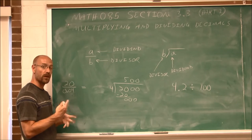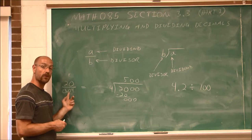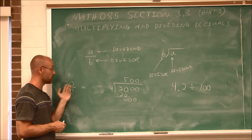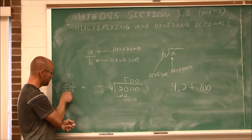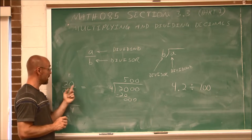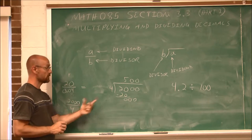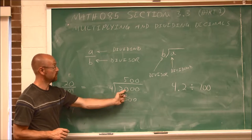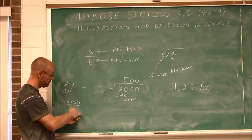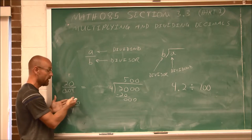Why do we move the decimal? We can't have a decimal inside a fraction, so what we do to the bottom, we do to the top — we can't change the fraction's value. If I move the denominator 0.04 over two spots, it becomes 4. Then I have to give the numerator two more places as well, making it 2,000. So 2,000 divided by 4 is the same as 20 divided by 0.04. When we move the decimal, we must do it to both denominator and numerator.